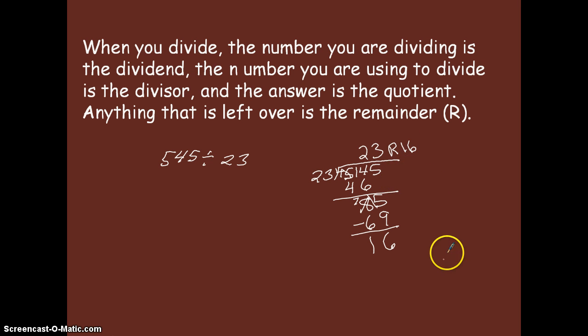Now I could check this, check my work. I could say 23 times 23, and then add 16 to that product. But I don't think that's necessary. I'm pretty sure that this is the right answer. But for those people who wish to check their work, they can simply multiply the divisor by the quotient, and then whatever your product is, add the remainder to it.